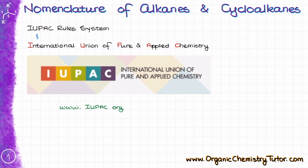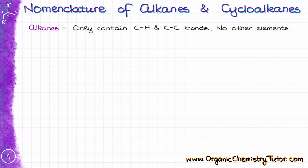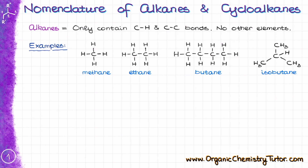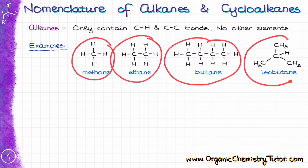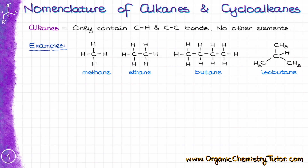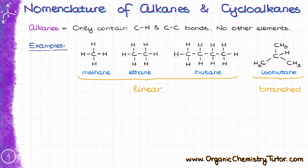Before we go into the naming itself, let's review really quick what alkanes and cycloalkanes are. Alkanes are the hydrocarbons that only contain single carbon-carbon and carbon-hydrogen bonds. They also do not have any other functional groups in their structure. For instance, we can draw a molecule of methane, ethane, butane, and isobutane, and all of these molecules are open-chain alkanes. Alkanes can be either linear or branched, and for as long as we have an open-chain molecule with only carbon-carbon single bonds and carbon-hydrogen single bonds, it is still an alkane.